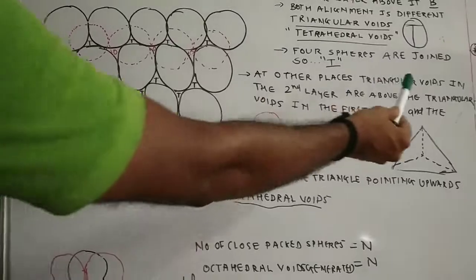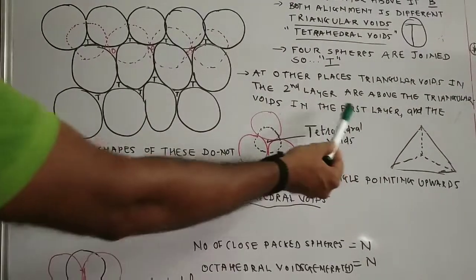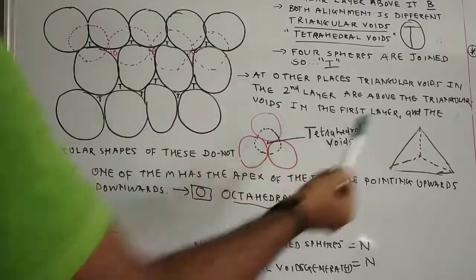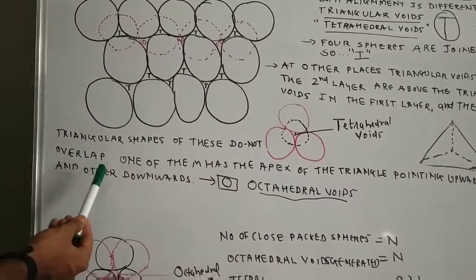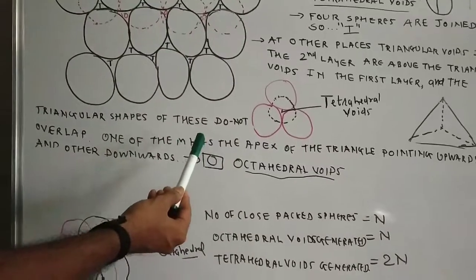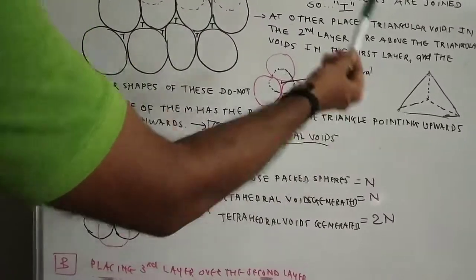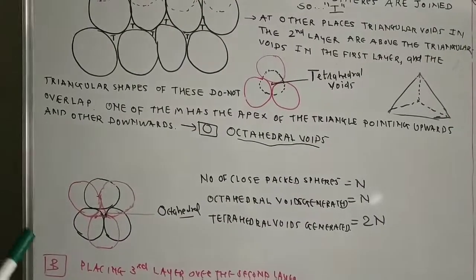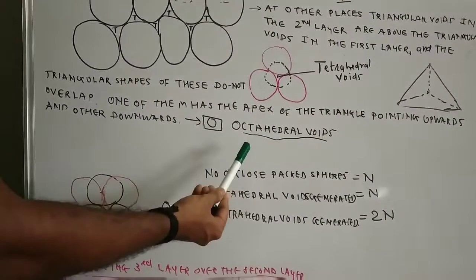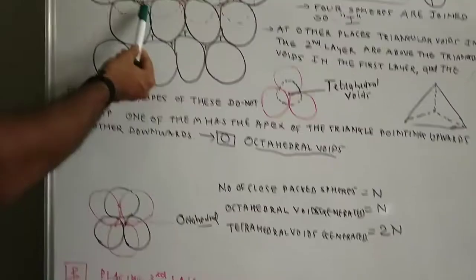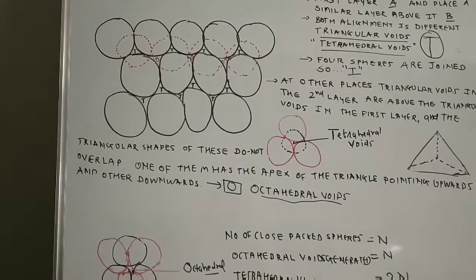At other places, the triangular voids in the second layer are above the triangular voids in the first layer, and the triangular spheres of these do not overlap. One of them has the apex of the triangle pointing upward and the second one is pointing downward. This generates the octahedral voids — in the diagram you can see O, O, O, O, O.